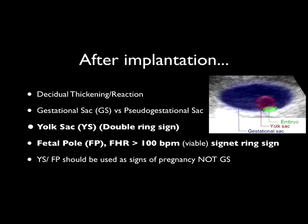Next we're going to talk about the normal progression of pregnancy. The first part of pregnancy we'll see decidual thickening of the endometrium. This is followed by the appearance of the gestational sac — it's important to identify this from the pseudogestational sac. This is followed by the yolk sac, otherwise known as the double ring sign. The yolk sac is the first definitive evidence of pregnancy that is intrauterine. This is followed by the appearance of the fetal pole. When we see a fetal pole we should identify if there is a fetal heart rate greater than 100 beats per minute, which would indicate a viable pregnancy. This is also known as the signet ring sign.